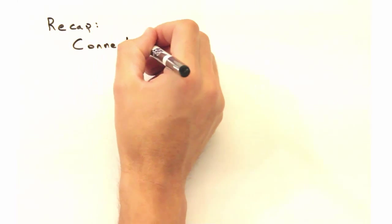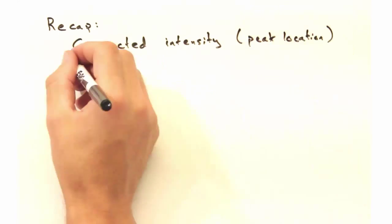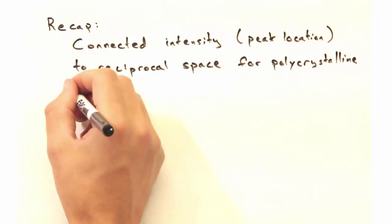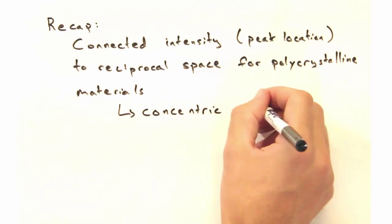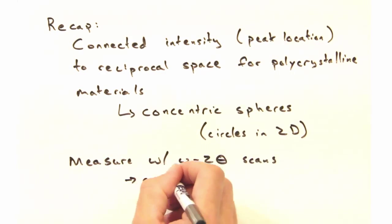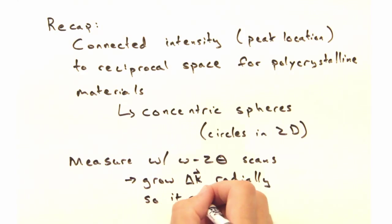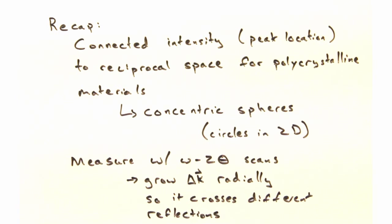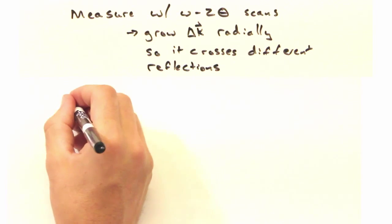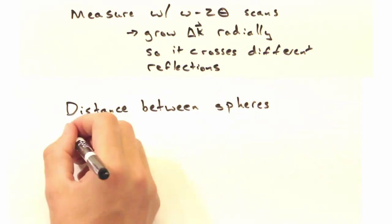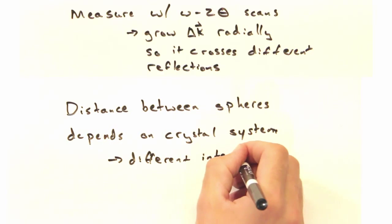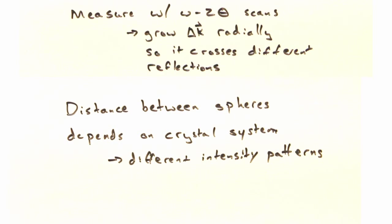So as a recap, we are ultimately able to connect intensity with reciprocal space for polycrystalline material through this concentric sphere model of reciprocal space. And we're able to utilize this with omega-2-theta scans, which grow delta k radially so that it crosses different reflections. We also saw that the distance between the concentric spheres changes depending on the crystal system, and thus gives rise to different intensity patterns.